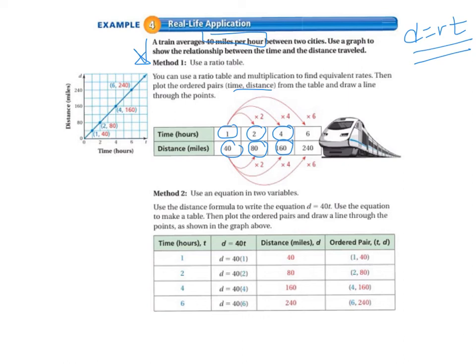And in six hours, it would be going 240 miles. And so we plot all of those points, and we make our graph. Again, time (hours) goes on the x-axis, and distance goes on the y-axis. And those are not labeled x and y. They're labeled t and d for time and distance.